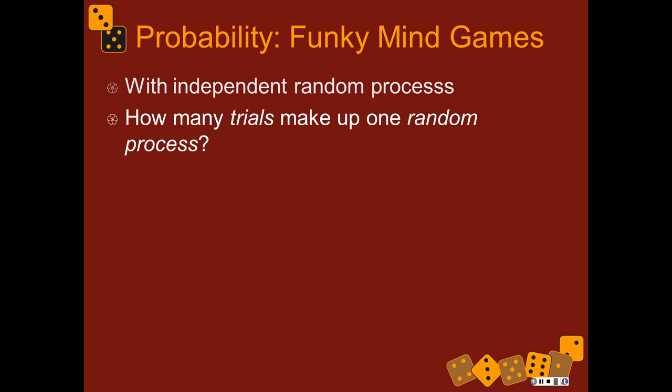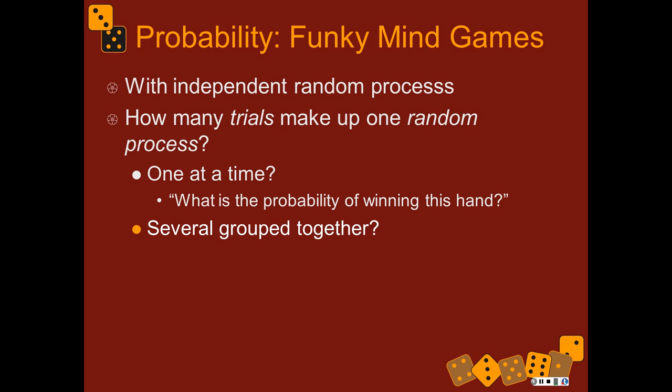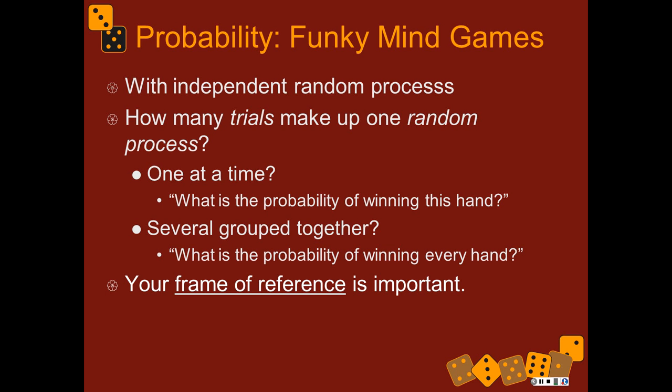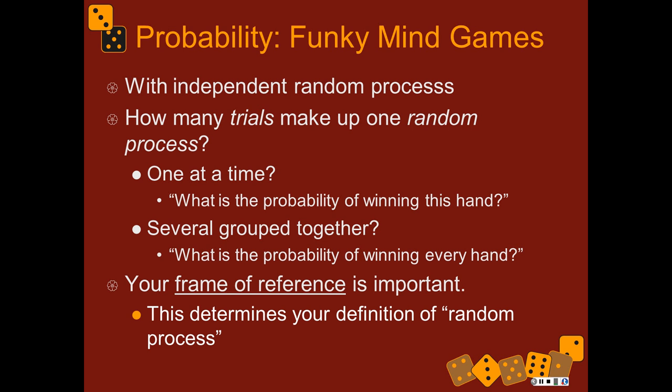Combining simple events into complex events over and over again is where the real weird complications of probability come in. Are we talking about just one independent trial at a time — the probability of winning this one hand in poker — or are we talking about several groups together, like the probability of winning every hand in video poker today, or the probability of winning at least one hand? That frame of reference and grouping of probabilities is extremely important. It totally changes the way probabilities happen and the way we calculate them.